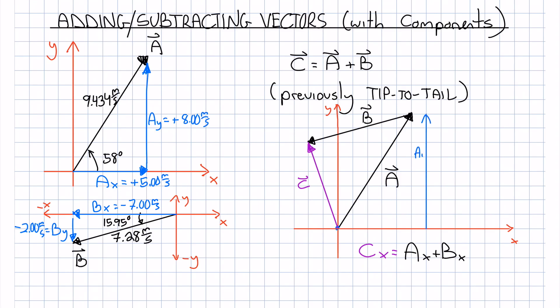A similar process works with the y components. For instance, Ay is plus 8, By is negative 2, so add these two together and you get Cy is plus 6 meters per second.